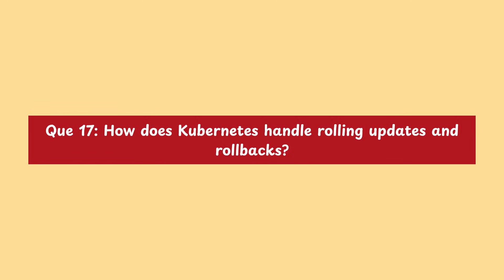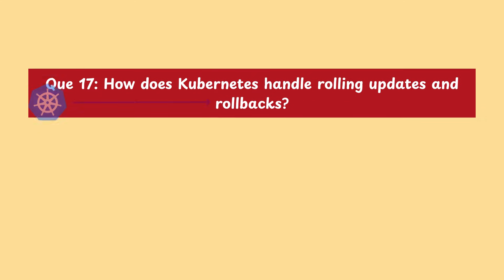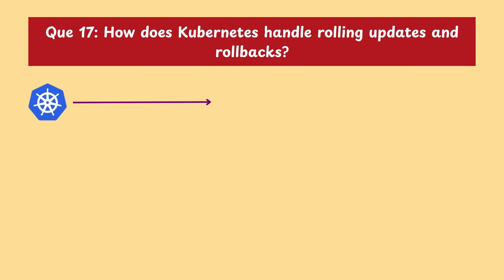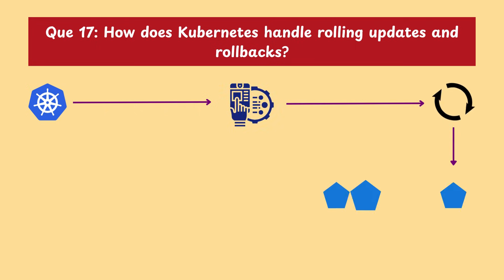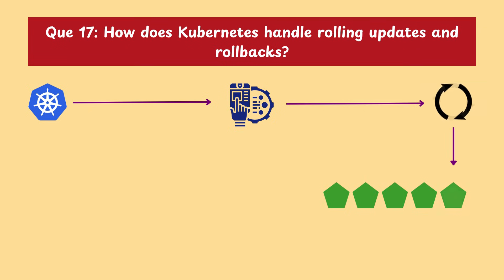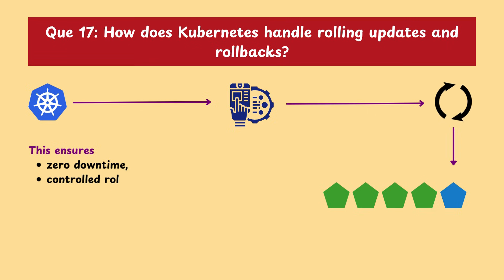Moving on with our next question: how does Kubernetes handle rolling updates and rollbacks? Kubernetes handles rolling updates through the deployment object, updating pods gradually to avoid downtime. It replaces old pods with new ones one at a time, while keeping the app still running. If something goes wrong, you can quickly roll back to a previous stable version using a single command. This ensures zero downtime, controlled rollout, and safe recovery during application updates.